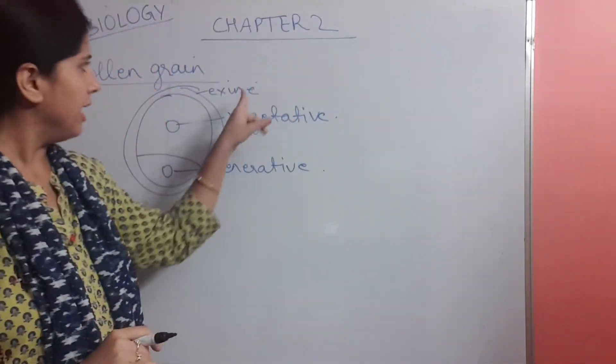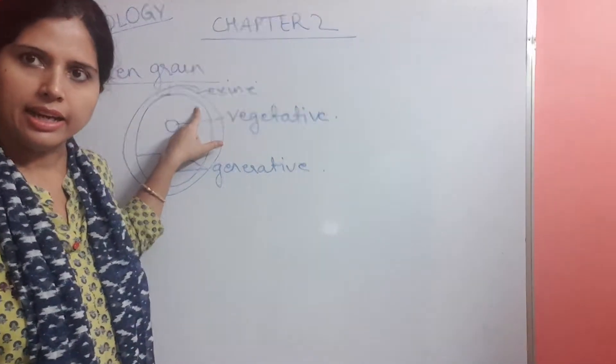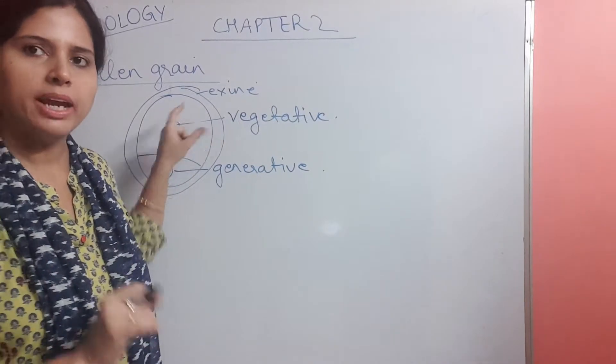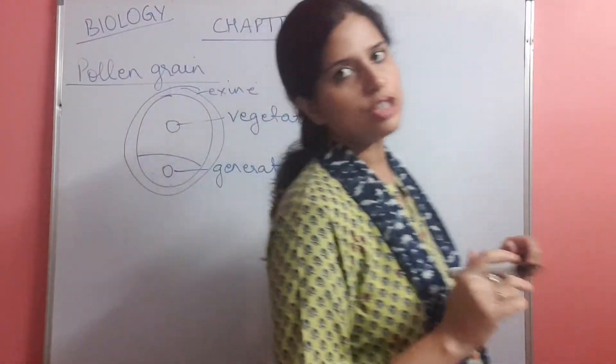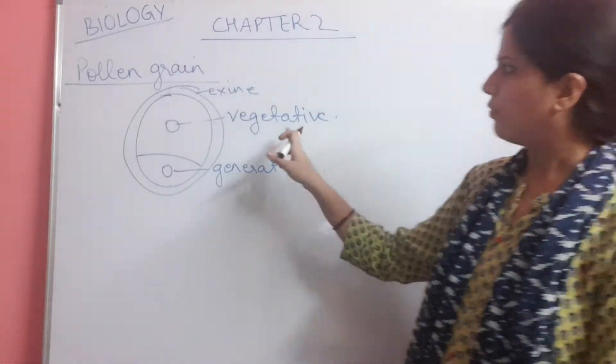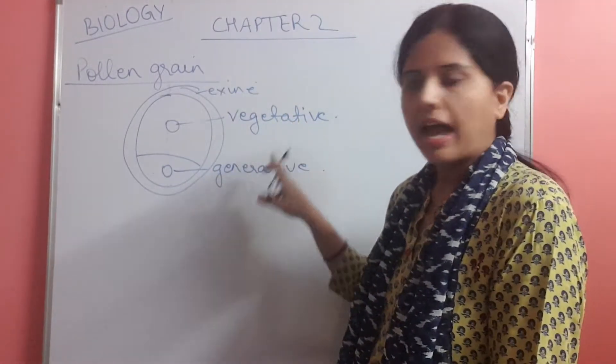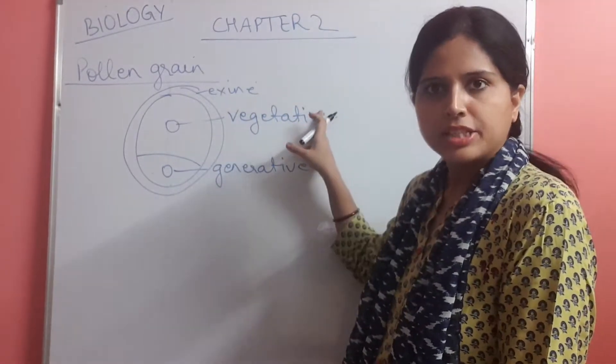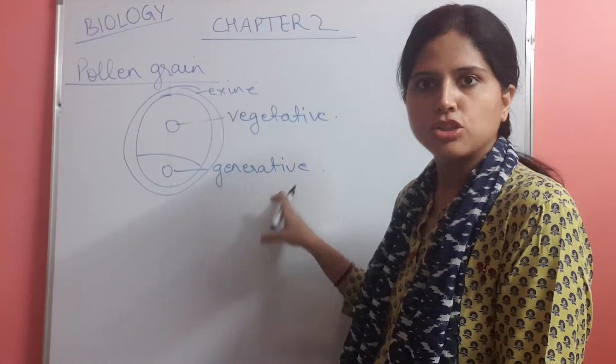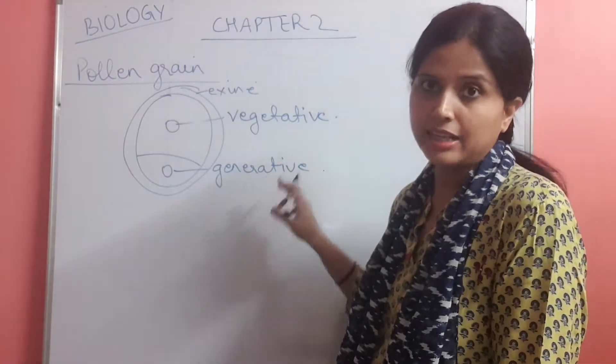Then beneath the exine, there is the intine layer. Intine layer which is made up of cellulose and pectin, which provides nutrition. Over here is a vegetative and generative cell. Vegetative and generative cells are generally separated because it is made by the mitotic division.